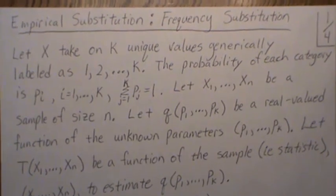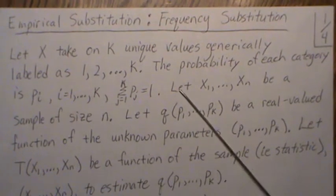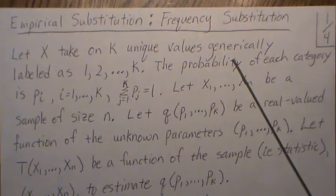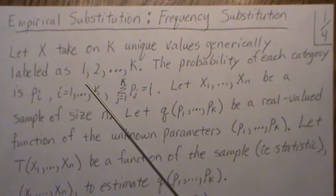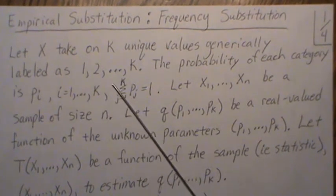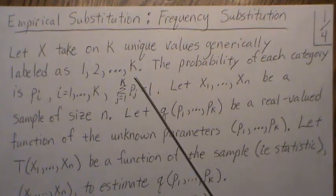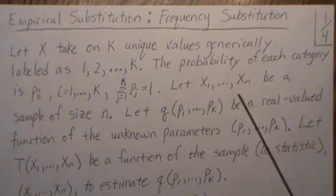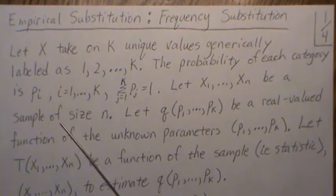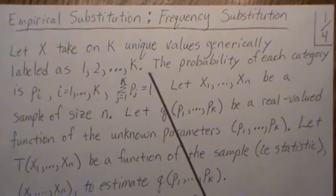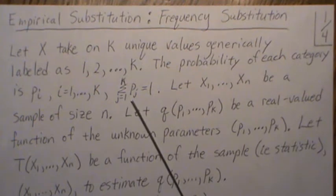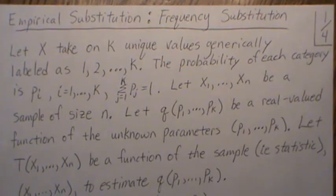Let X take on k unique values, generically labeled 1 through k. The probability of each category is pi for each k, and of course they have to sum to 1 to make it a probability mass function.